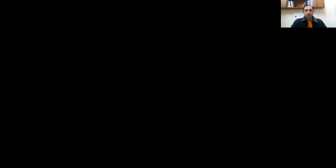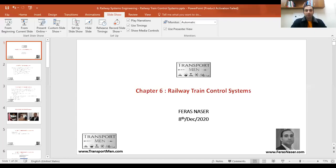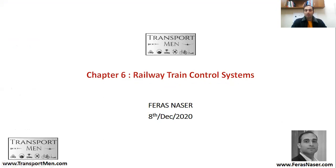This is the beginning of the chapter: railway train control systems. In this chapter, I'll be doing an introduction to railway signaling, and I'll be talking about timetable and time graph development. I'll talk about different signaling system types, and I will talk about ETCS and advanced signaling systems, which is part of the ERTMS — the European Railway Traffic Management System.